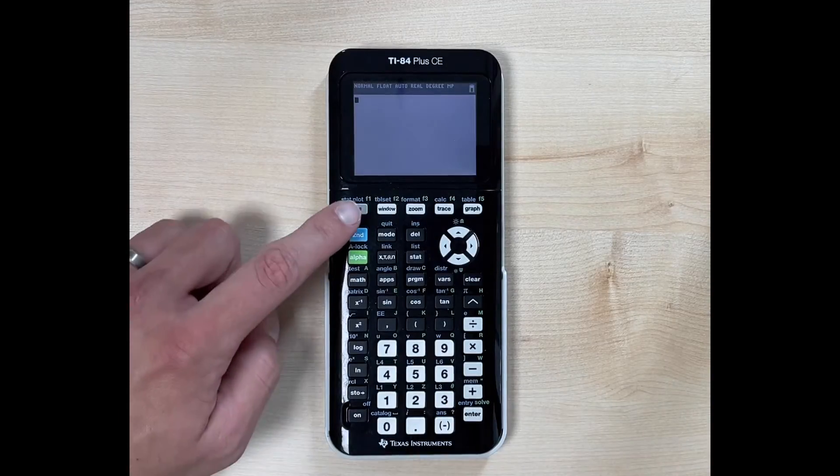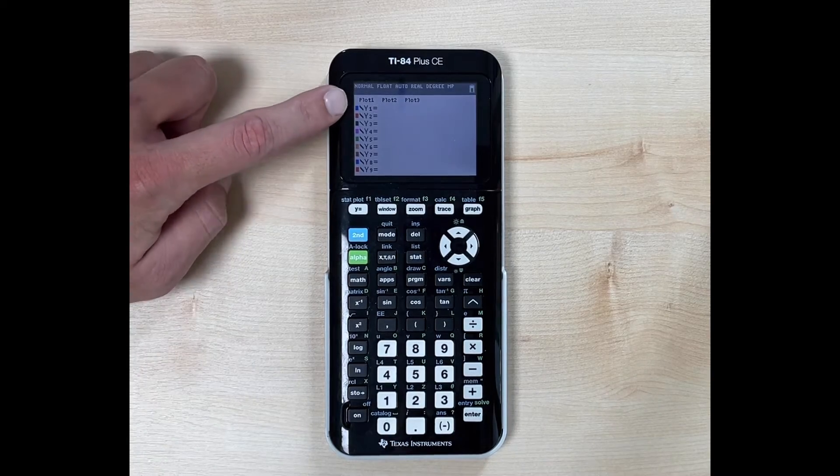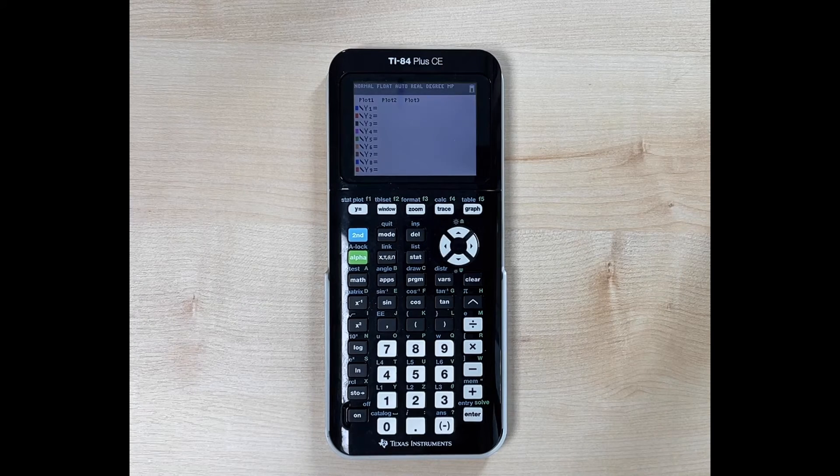Now we're at the home screen. We're going to hit y equals. And now we notice that x equals is not there. If this is what your calculator looks like right now, here's how you add that feature in order to be able to graph a vertical line.